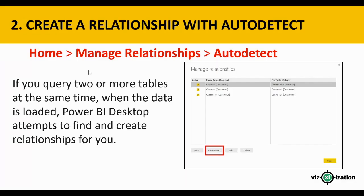If for some reason we don't see a created relationship, we can go to Home > Manage Relationships and then hit Auto Detect, and the program will create the relationships for us.